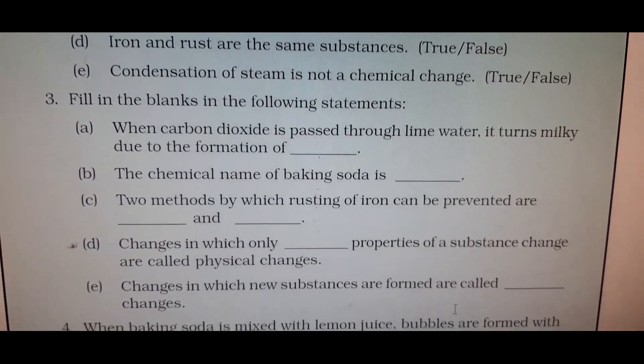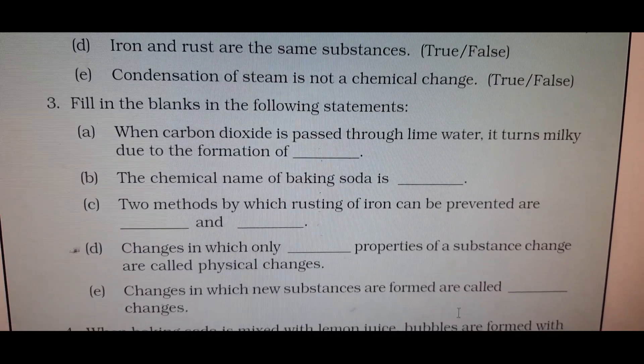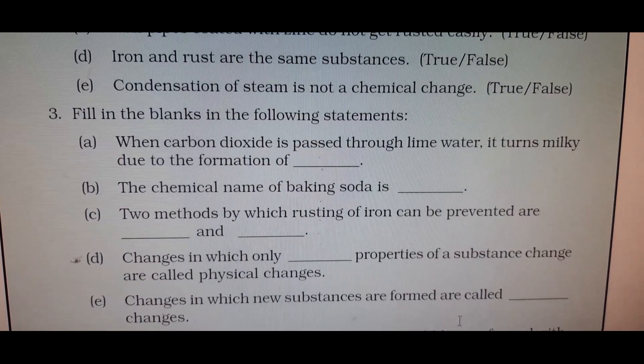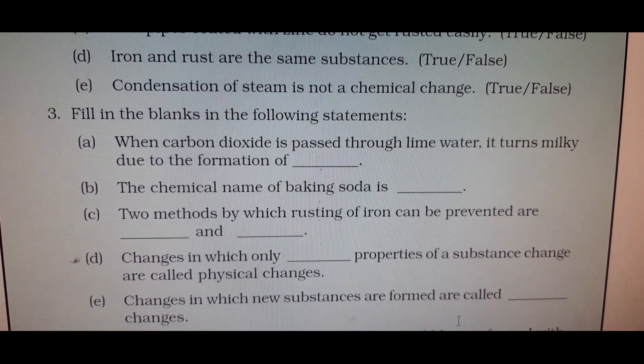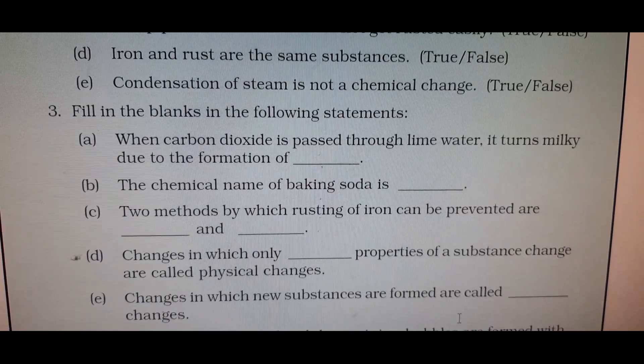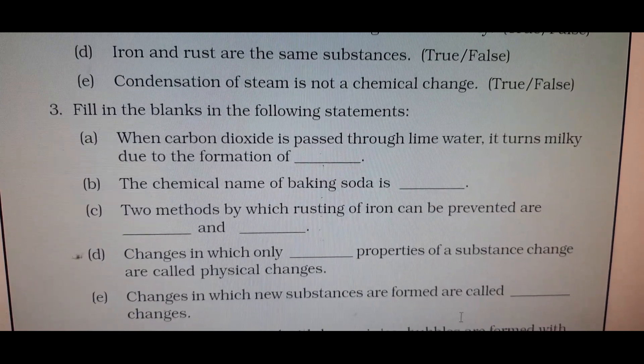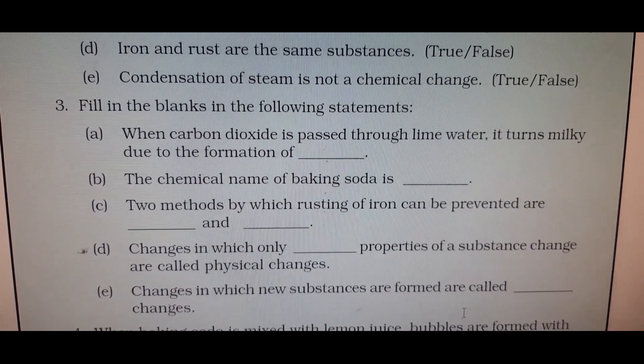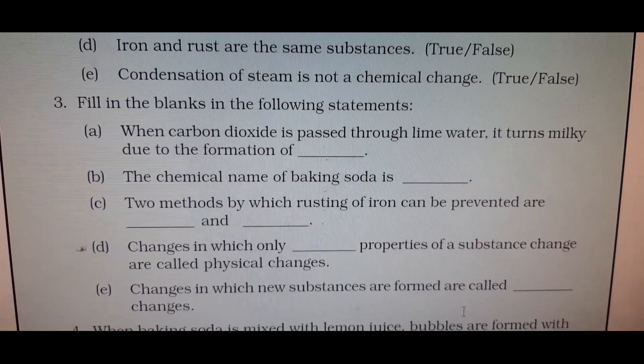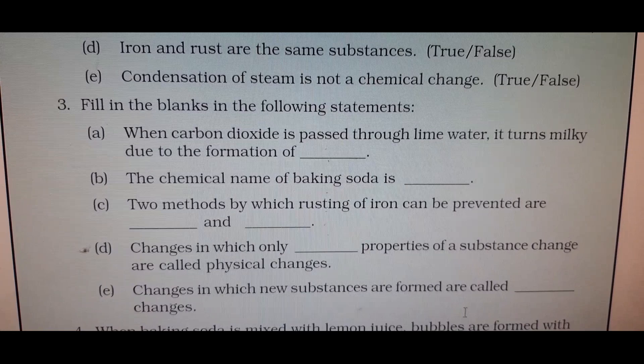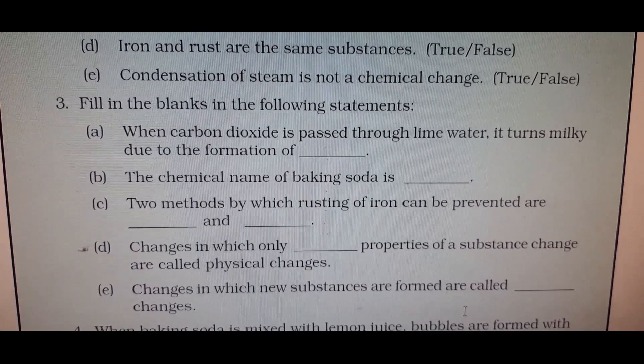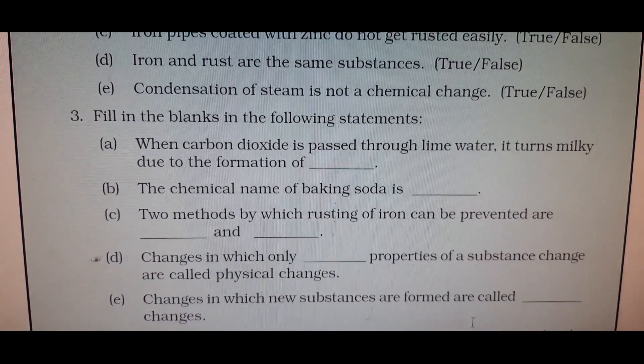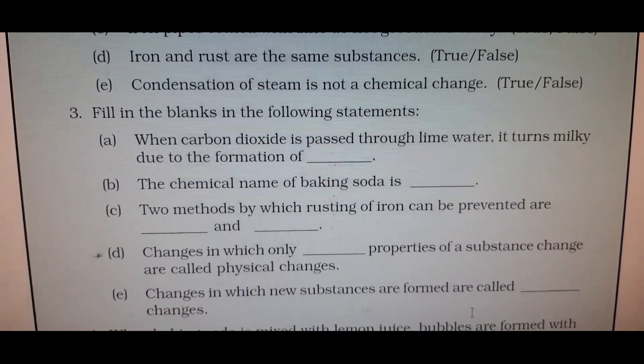Question number 3, you can do in the book itself, no need of copying. When carbon dioxide is passed through lime water, it turns milky due to the formation of calcium carbonate. The chemical name of baking soda is sodium hydrogen carbonate. The two methods by which rusting of iron can be prevented are by painting, by galvanization or by alloying. Changes in which only physical properties of a substance change are called physical change. Changes in which new substances are formed are called chemical change.